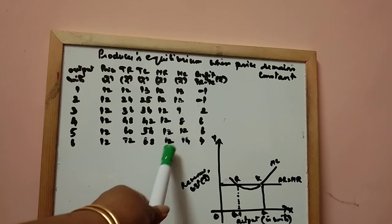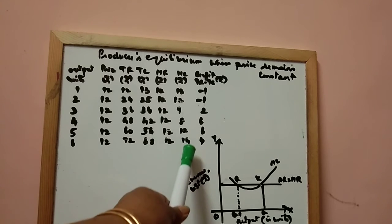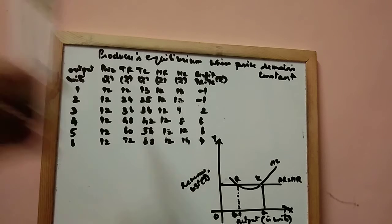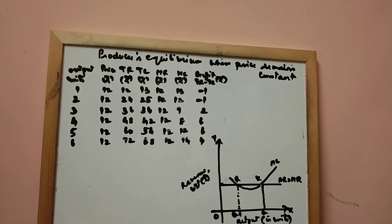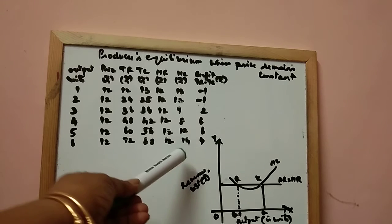What is the second condition? After this, if he continues the production, what happens? This MC becomes more than MR. That means cost is more than revenue. So you will not get profit.